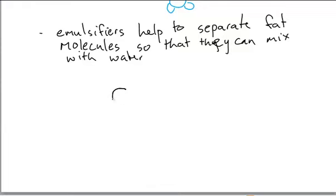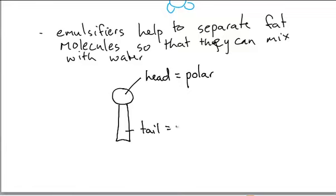If we look at an emulsifier, it basically has what we call a head and a tail. And its head is a polar chemical group, meaning it has either a positive or negative charge, whereas its tail is nonpolar, meaning it doesn't have a charge. So if you're polar or charged, and we think back to what we learned about water, you are hydrophilic. You like to interact with water.